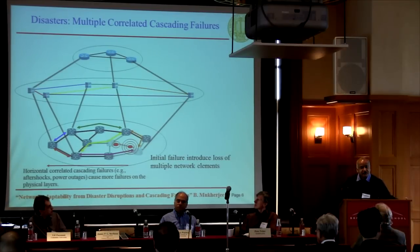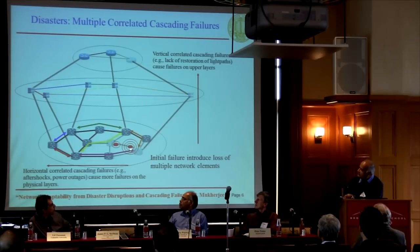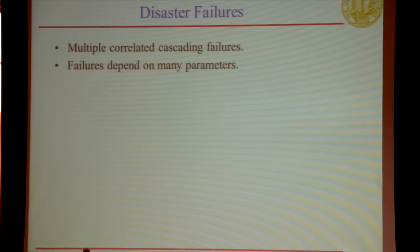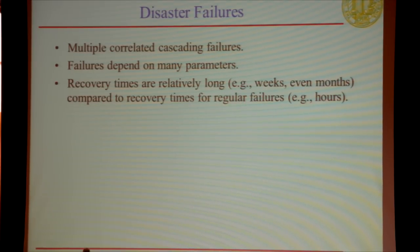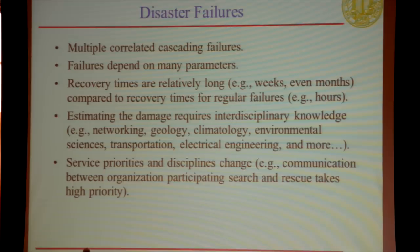When infrastructure fails due to disaster, it can cause various cascading failures. Horizontal cascading failures progress from node to node at the same layer. Vertical cascading failures occur because a failure in the fiber layer induces failures at higher layers, which may take a little longer to show up. Multiple correlated cascading failures can occur and depend on many parameters; recovery times can be long. Estimating the damage requires interdisciplinary knowledge — from networking, geology, climatology, and environmental sciences — in order to improve disaster preparedness.